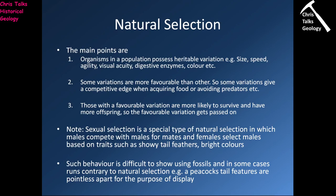Having this particular variation means you are more likely to survive, more likely to have offspring, and those offspring are more likely to make it to adulthood. As such, those favourable variations will get passed on to the next generation. Unfavourable characteristics will slowly be removed from the population, the favourable ones will become more dominant, and the organism will slowly adapt to its environment over time.